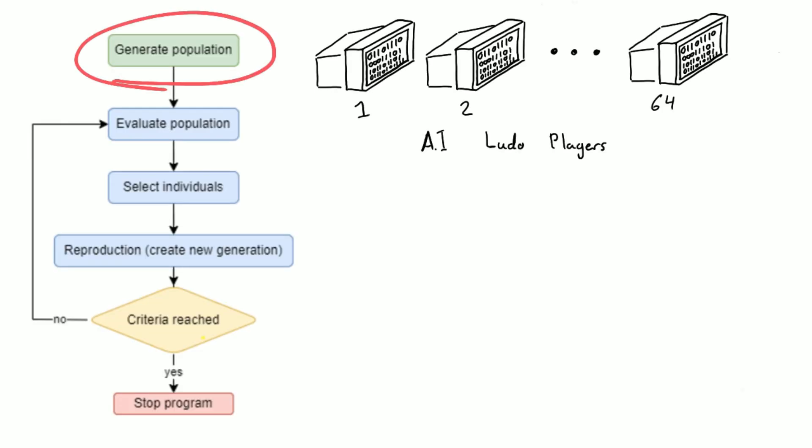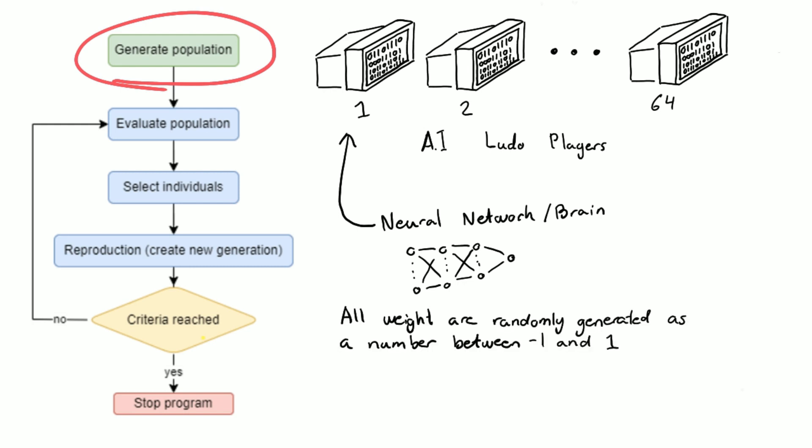The first thing I did was generate a population, in this case meaning 64 individuals or artificial intelligences that are going to play Ludo with the neural network as their brain, and they all were created with random chromosomes filled with random values varying from minus one to one.